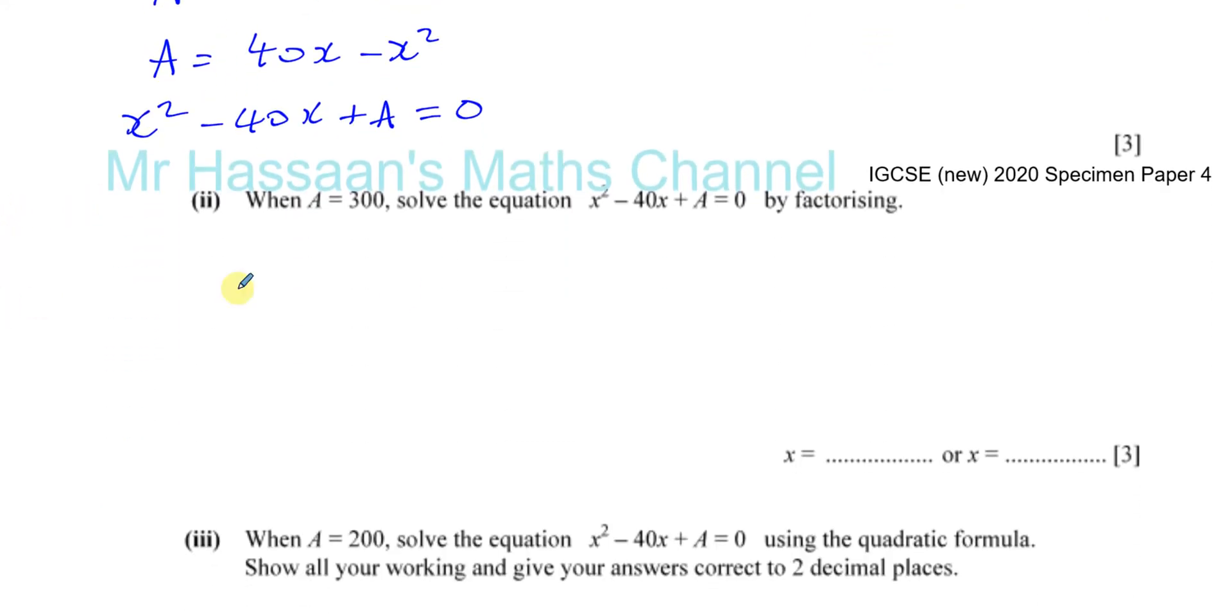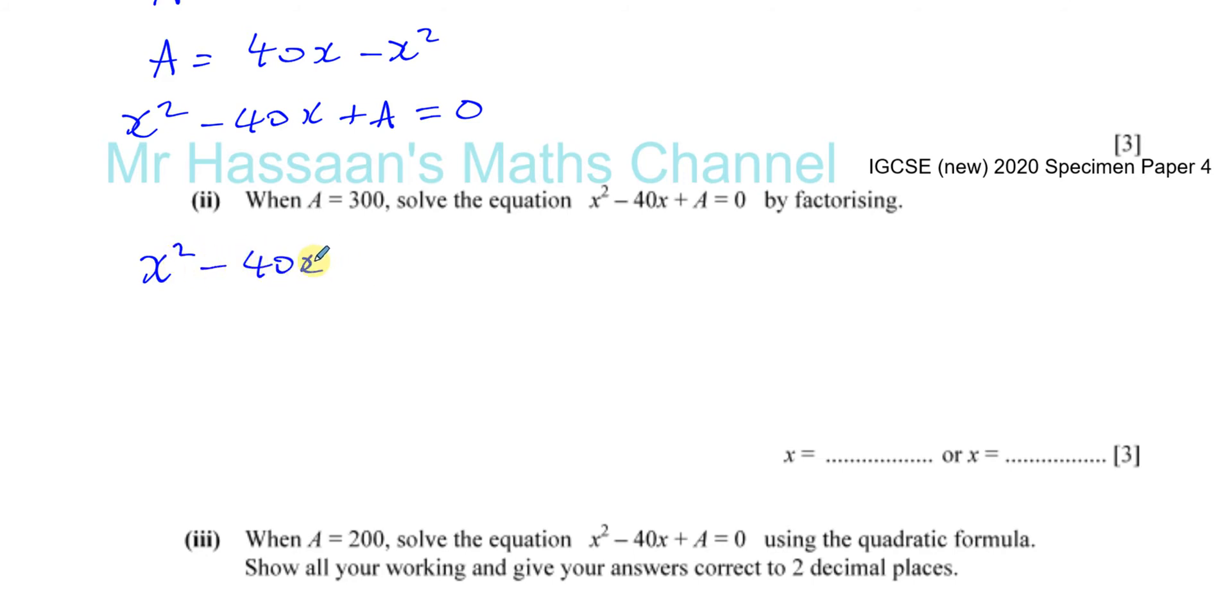Then it says, when a equals 300, solve the equation x squared minus 40x plus a equals 0. So you're going to have x squared minus 40x plus 300 equals 0. So we have to solve this equation by factorizing. So that you can't use the quadratic formula. You can't use completing the square. You have to factorize. So you have to show that you put it into two brackets and you have factorized. So you think of two numbers which multiply together to give you a positive product and a negative sum. They must have the same sign and the same sign must be negative. Because you add them together, you get negative. You multiply them, you get positive. Then you think of two numbers multiplying together. So the product is 300 and the sum is negative 40.